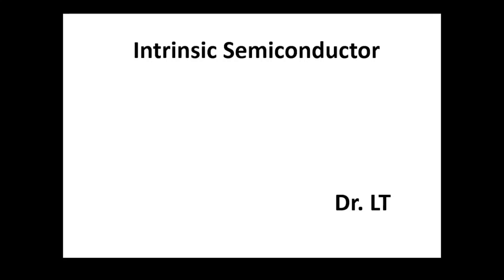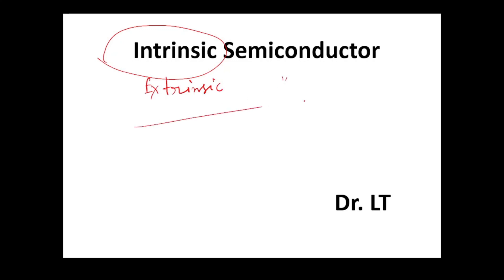Today we have a very interesting question. Semiconductors are classified into types: intrinsic semiconductor and extrinsic semiconductor. Extrinsic semiconductors include N-type semiconductor and P-type semiconductor. Today we are going to talk about intrinsic semiconductor.